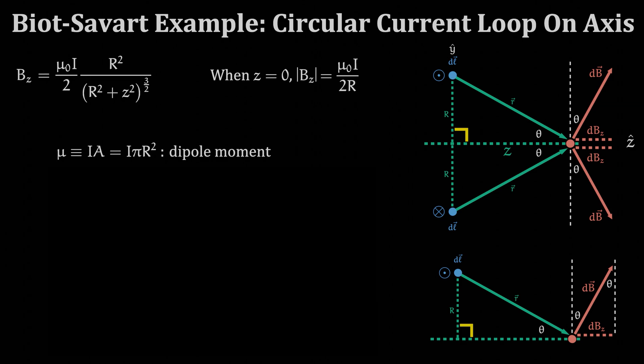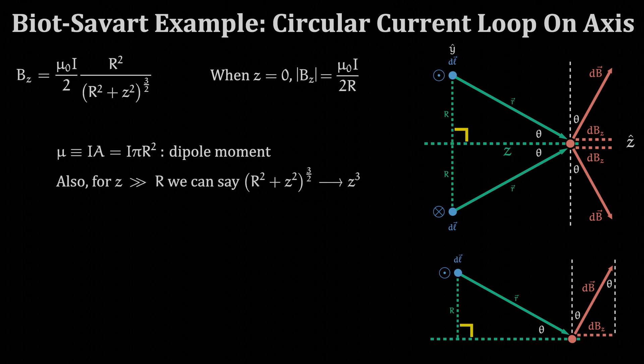Now if z is much larger than the radius of the loop, capital R, then the denominator is mainly influenced by the z variable, and we can say that the R squared term has zero weight in the denominator. This means we can write the denominator instead as just z cubed. This gives us this form for Bz.